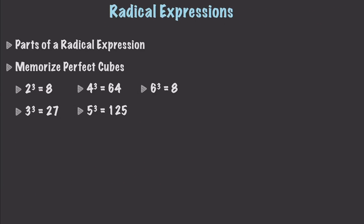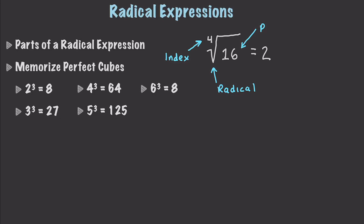So what exactly is a radical expression? Well, this is a radical expression. We have a square root — we're trying to find the value that, when multiplied by itself 4 times, is equal to 6. Of course, this is going to be equal to 2. The part up here is called the index, this part right here is called the radical, and this part right here is called the radicand.